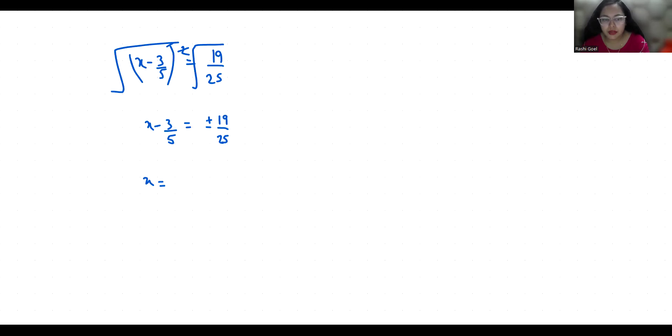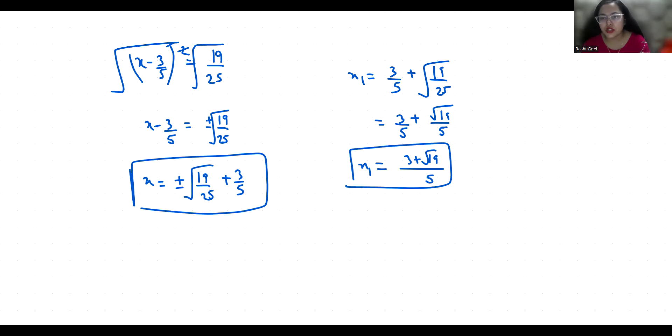So two values of x are: x₁ is 3/5 + √(19/25), or you can write it as 3/5 + √19/5. So (3 + √19)/5. This is x₁. Similarly, x₂ is 3/5 - √19/5. x₂ is (3 - √19)/5.